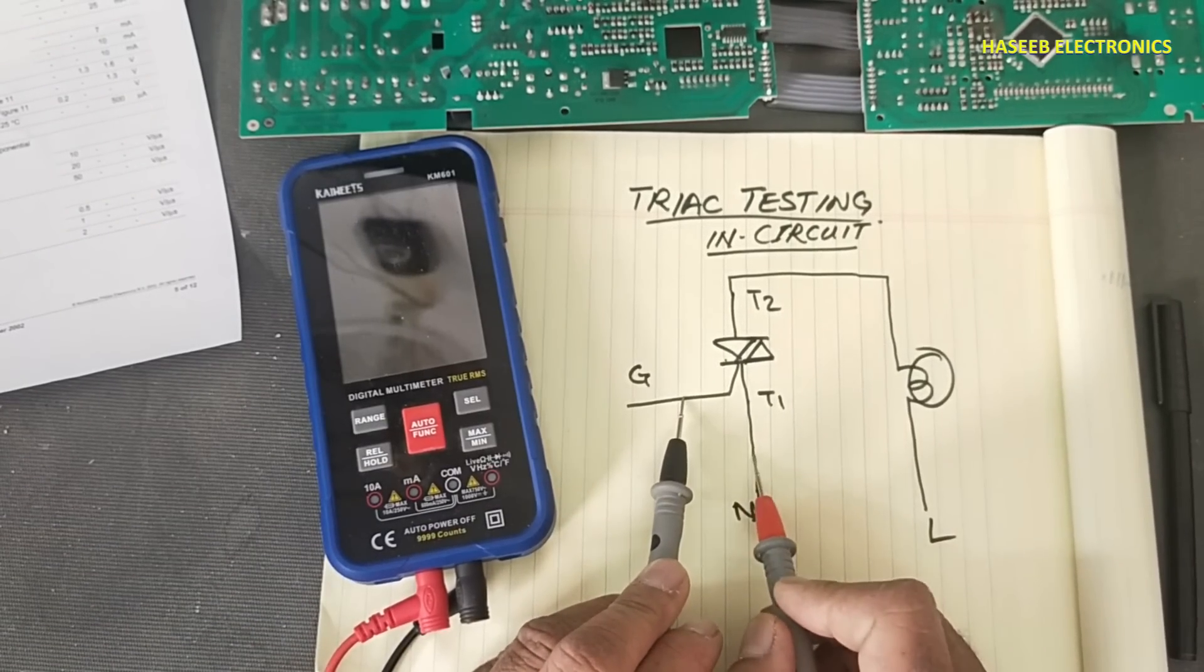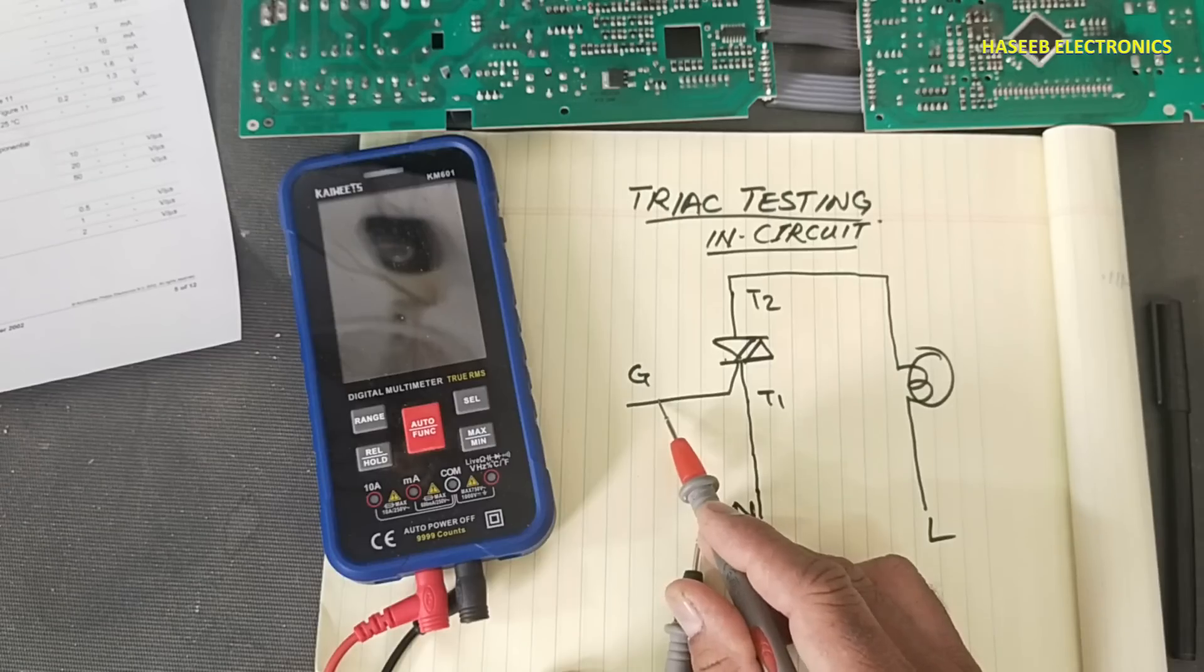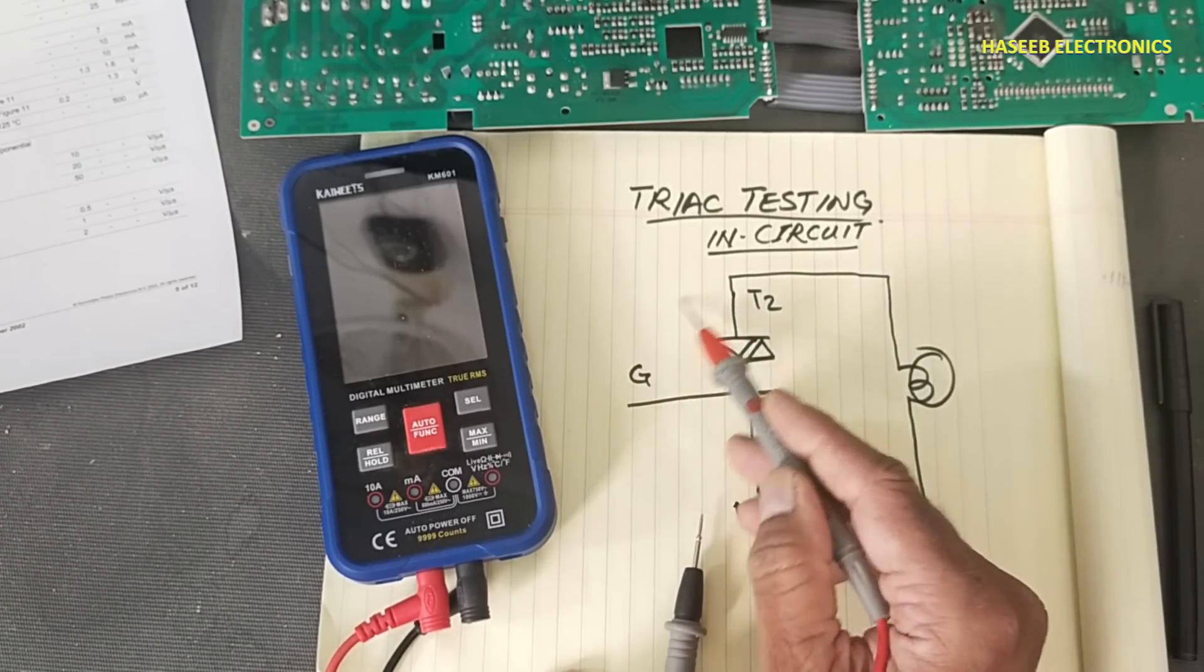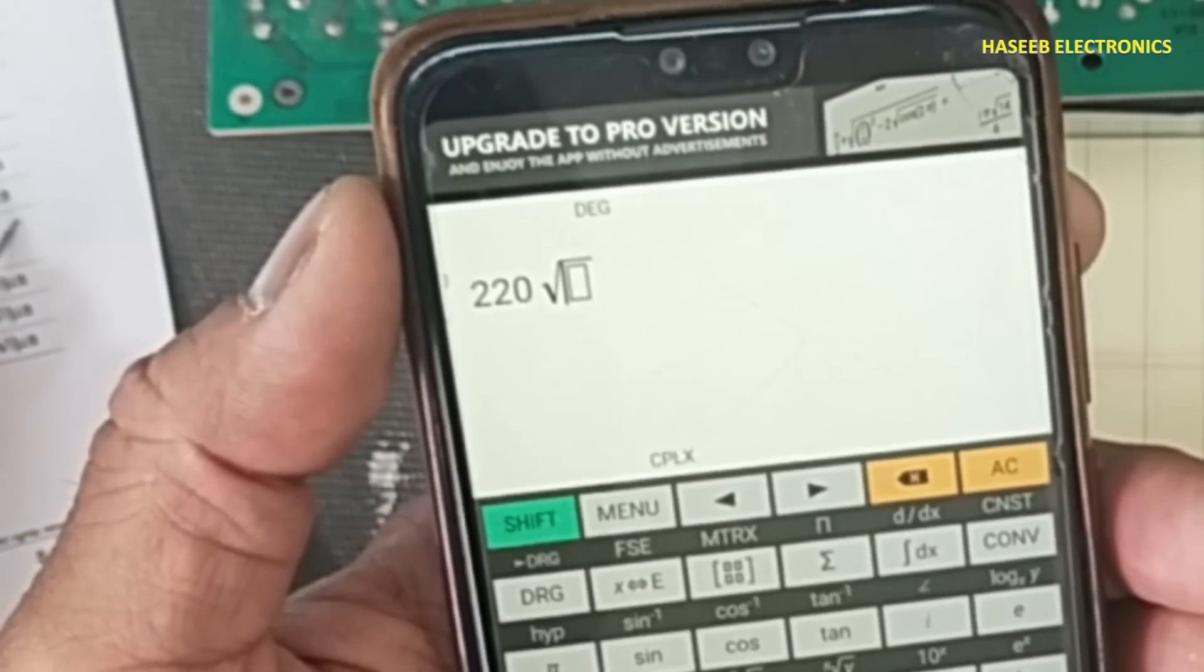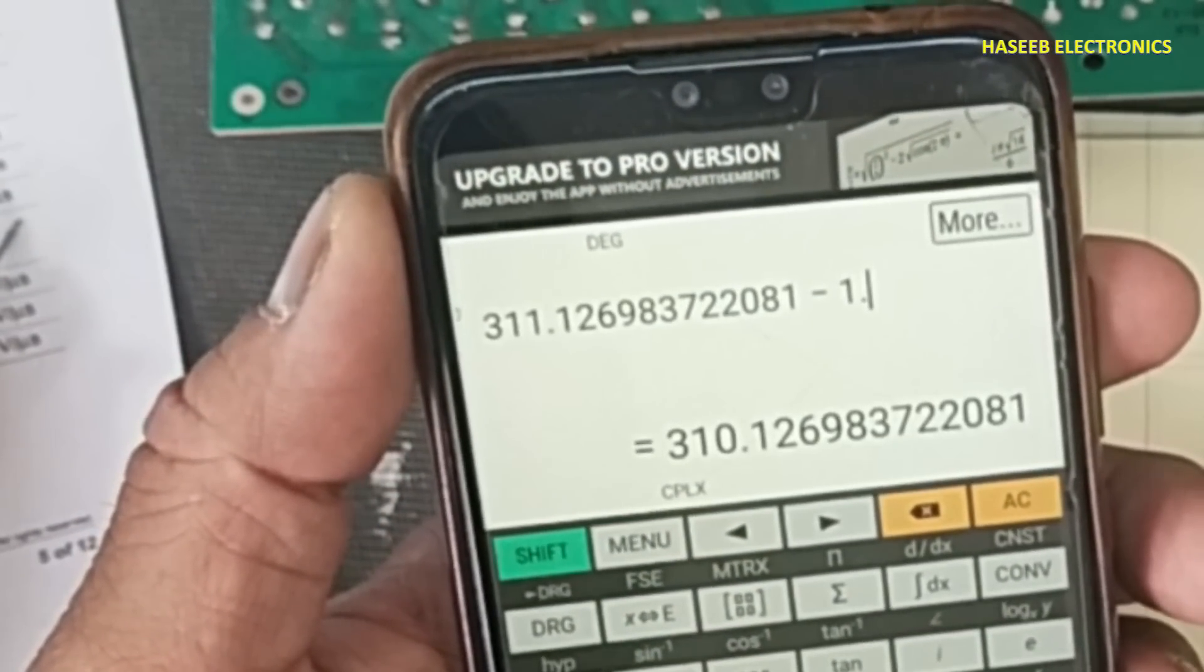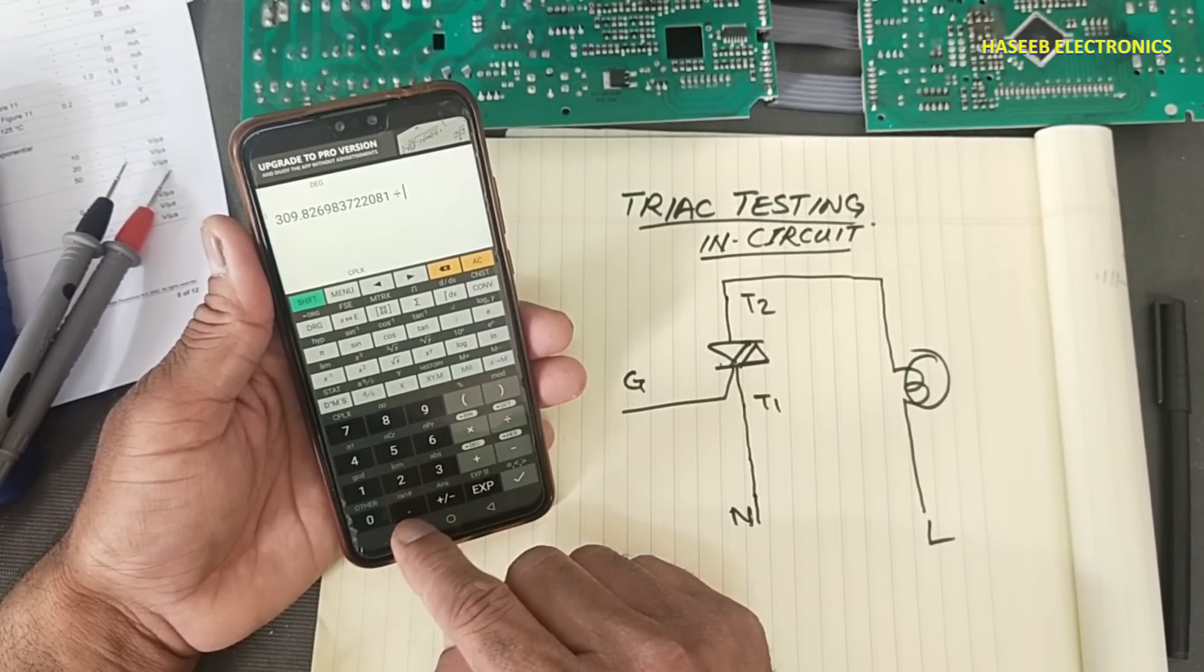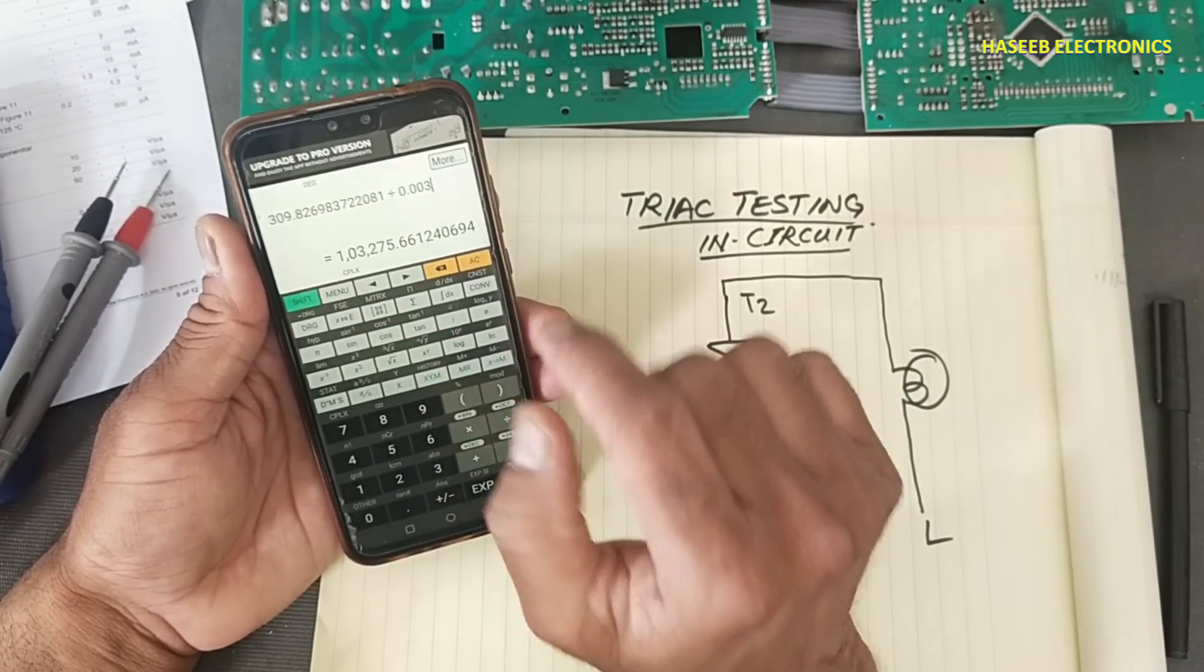We're exceeding its maximum voltage limit. If you make a jumper between terminal 1 and gate, it won't trigger. It needs the trigger current and voltage between these two terminals. We have 220 volts AC, which is 311 volts DC. 311 minus 1.3 volts equals 309.7, and the maximum current is 0.003 ampere, so we need 103 kilohm resistance.